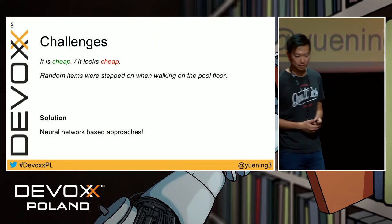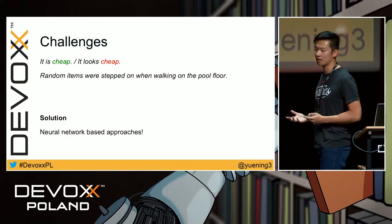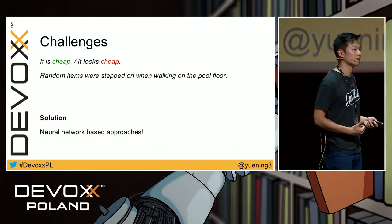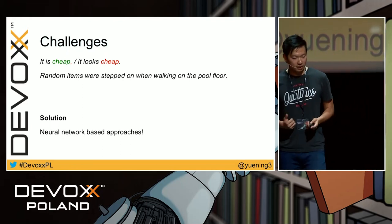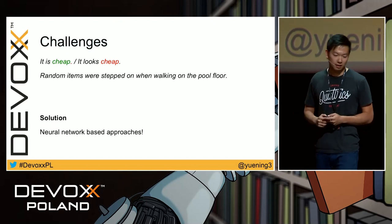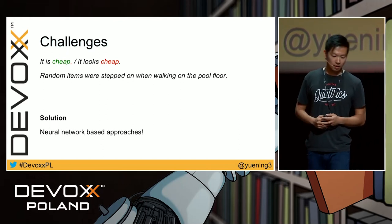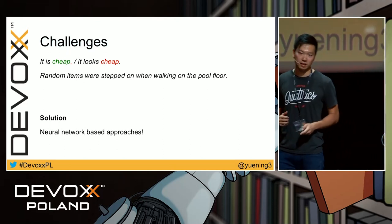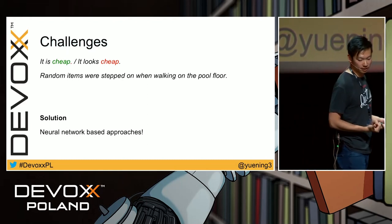But there are challenges with the lexicon-based approach. The word 'cheap' could mean good (low price) or negative (low quality appearance), depending on context. And consider 'random items were stepped on when walking on the pool floor' — we know that's negative, but there's no sentiment word and it's hard to make a rule for that. What if we can find a way to avoid labeling sentiment words and avoid coding all those rules? We can do that with a neural network-based approach.